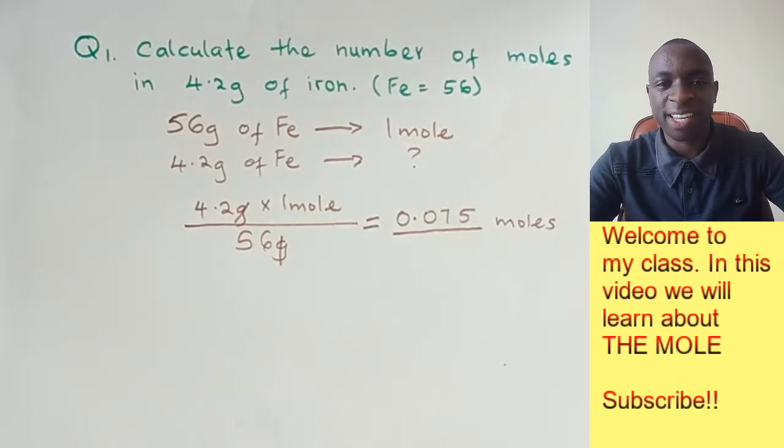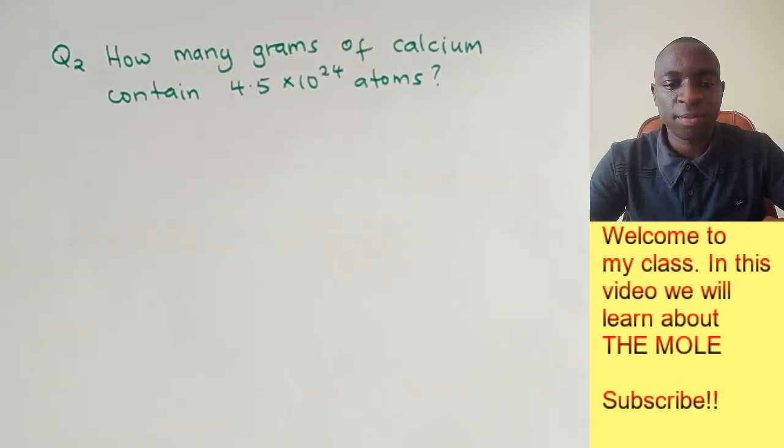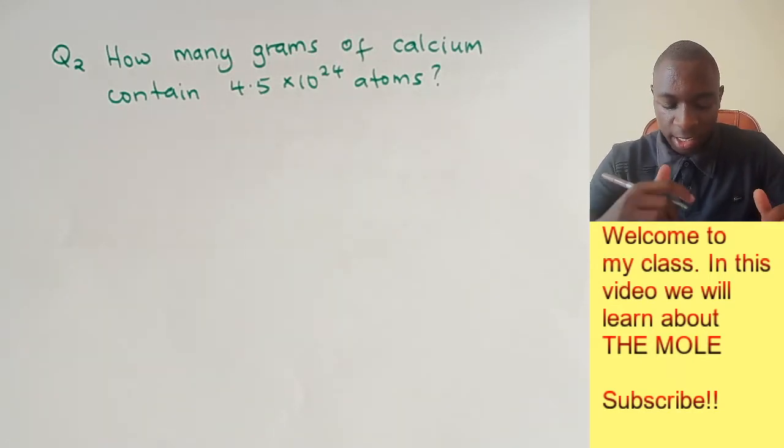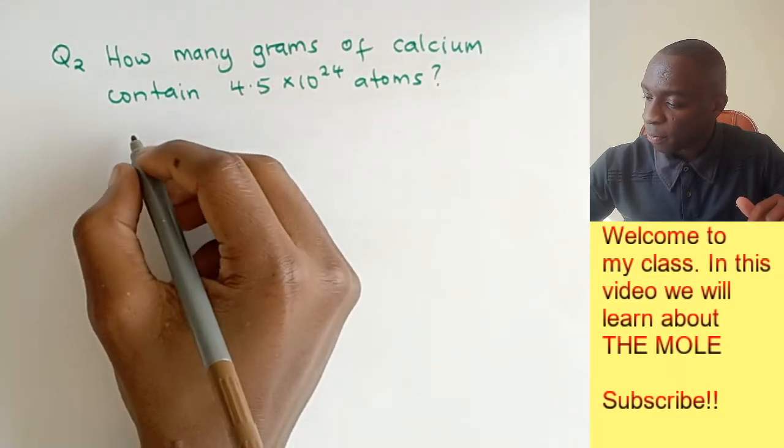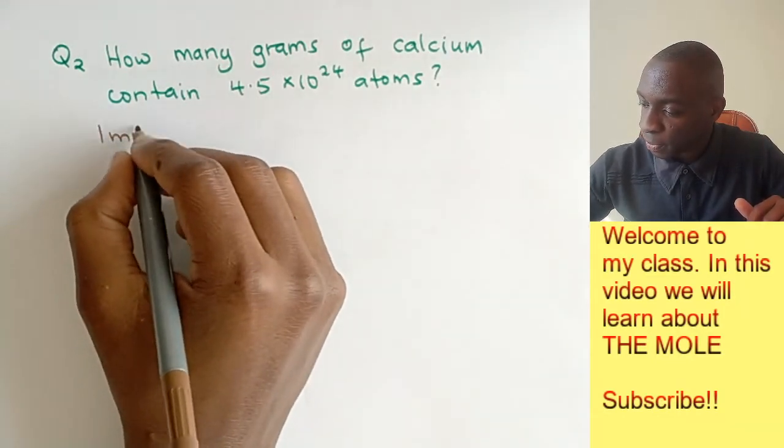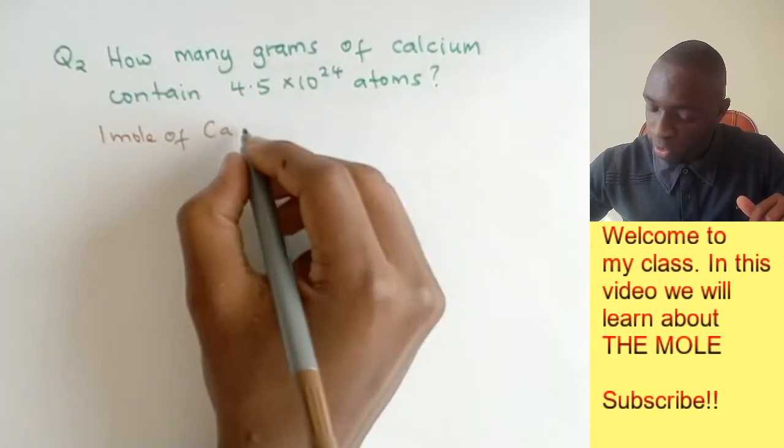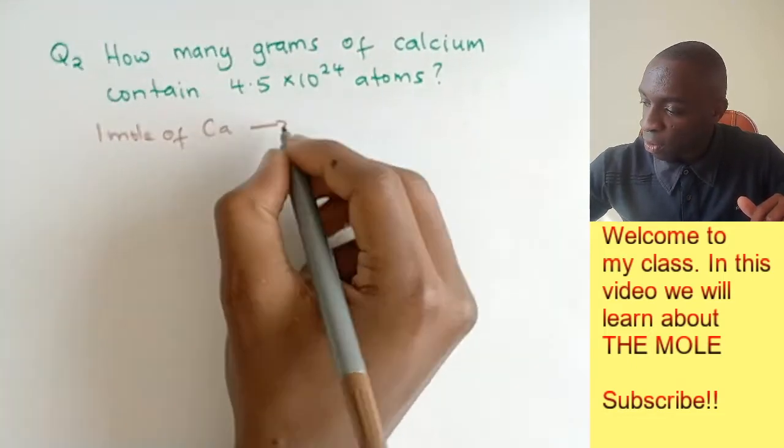Let us head to our second example. How many grams of calcium contain 4.5 times 10 to the power of 24 atoms? In this question, what you need to do first is realize that 1 mole of calcium has a molar mass of 40 grams.